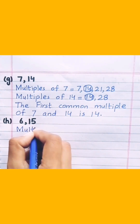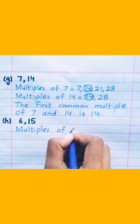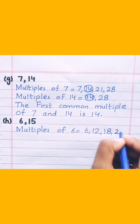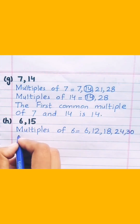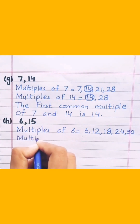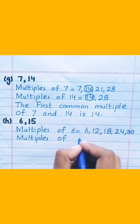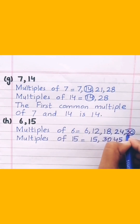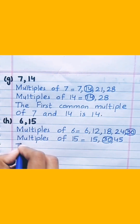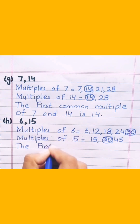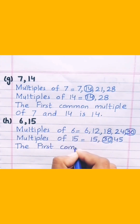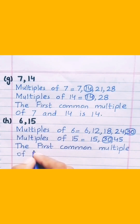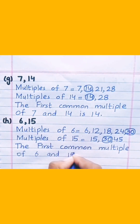Multiples of 6: 6, 12, 18, 24, 30. Multiples of 15: 15, 30, 45. The first common multiple of 6 and 15 is 30.